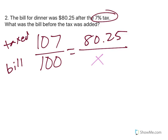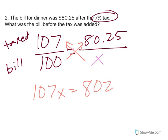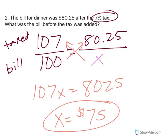If it says the bill was $80.25 after tax, it goes on top. What was it before? I cross multiply: 107X equals 8,025. I divide by 107 and my bill before tax was $75.